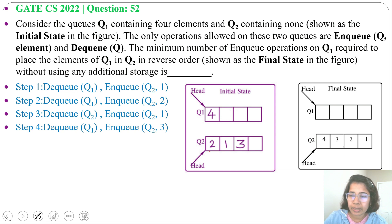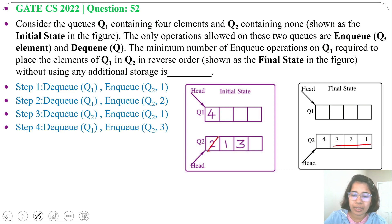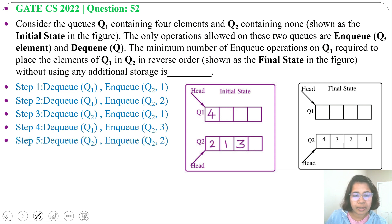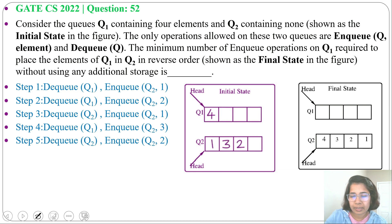It should be 3, 2, 1 — in reverse order. So we DQ from Q2 and NQ at Q2, then again DQ from Q2 and NQ at Q2. After these operations we get Q2 as 3, 2, 1.